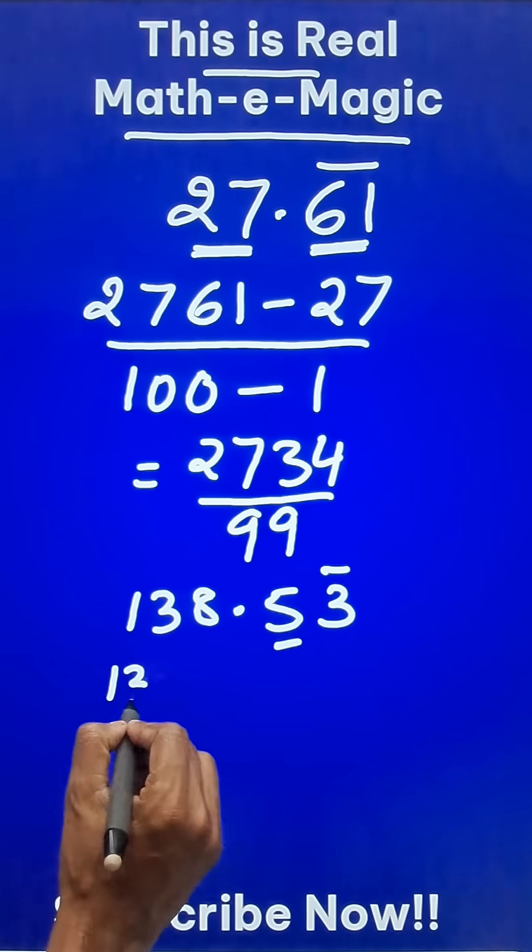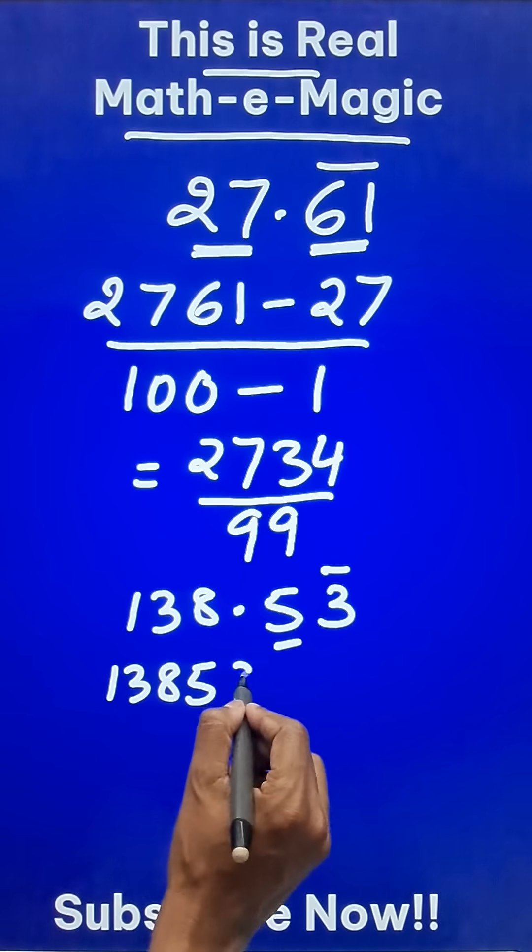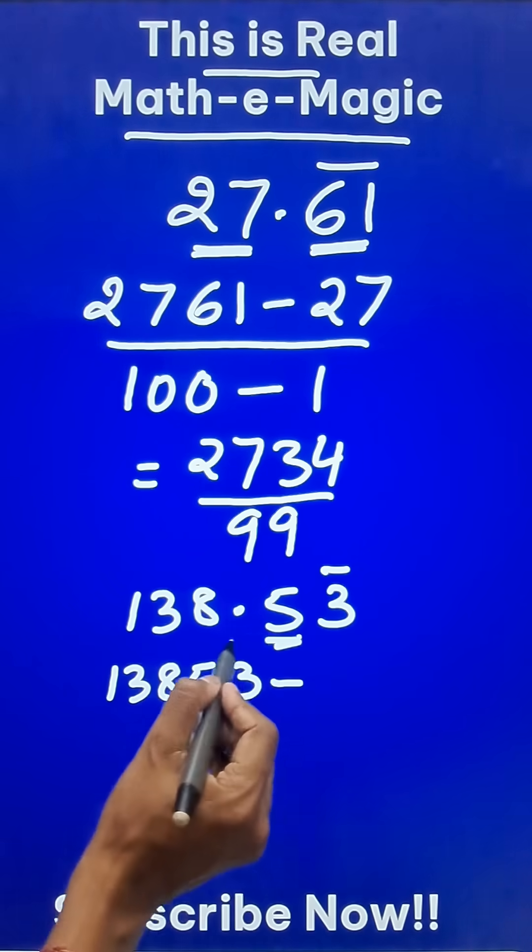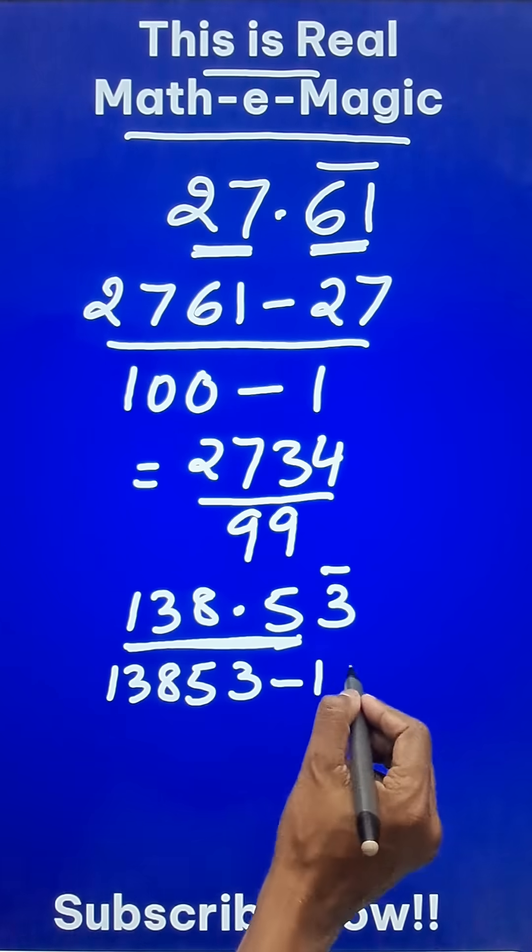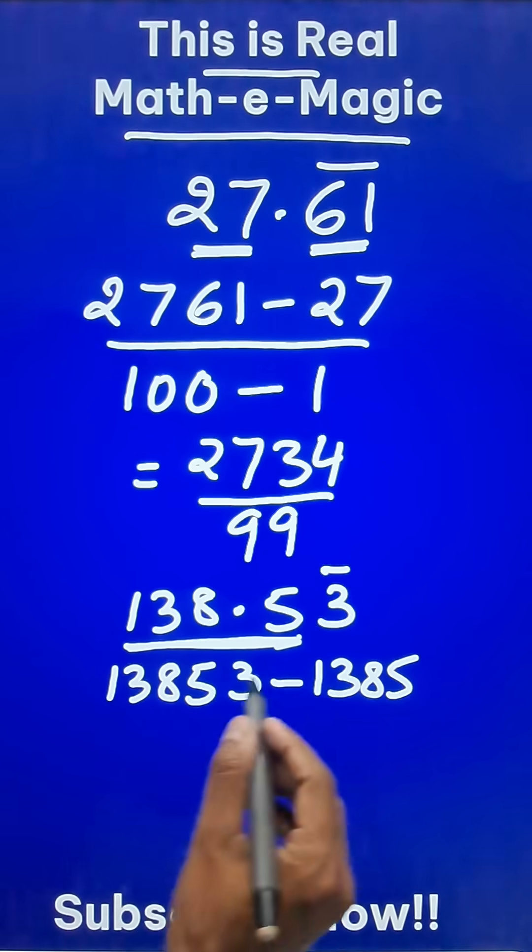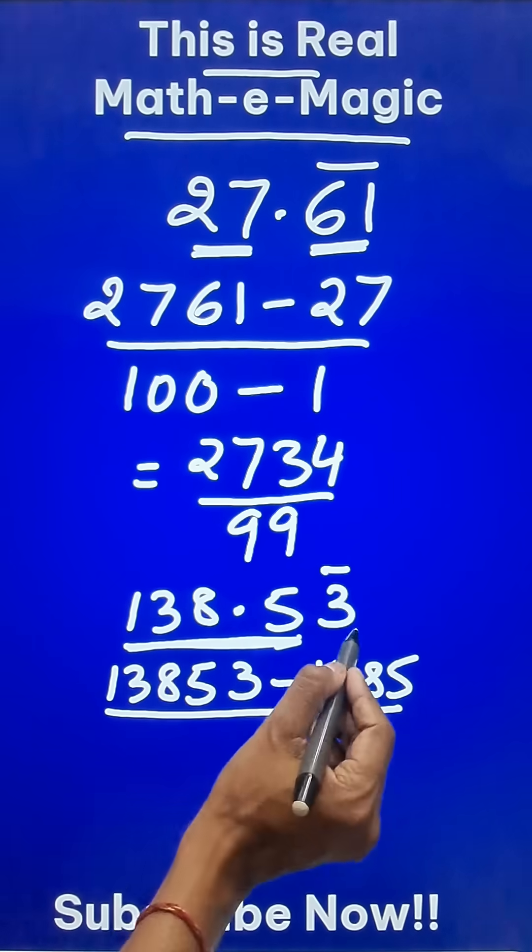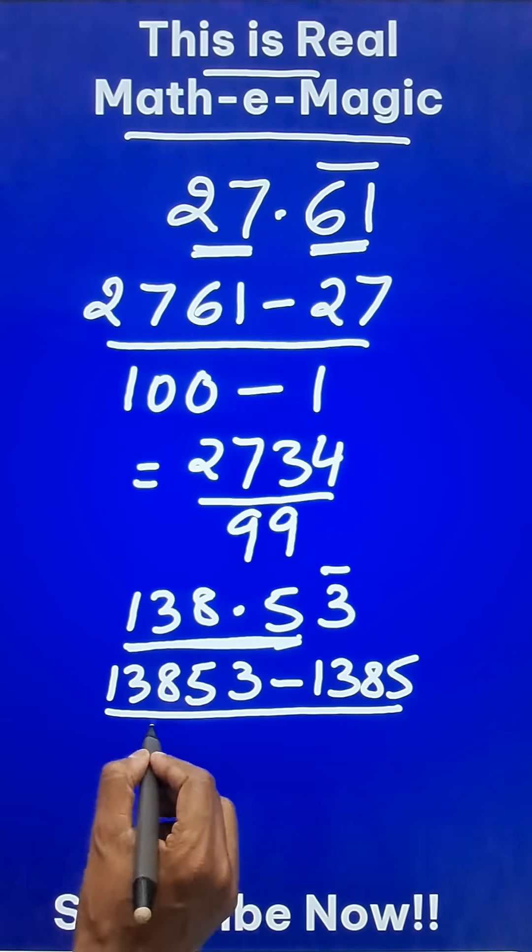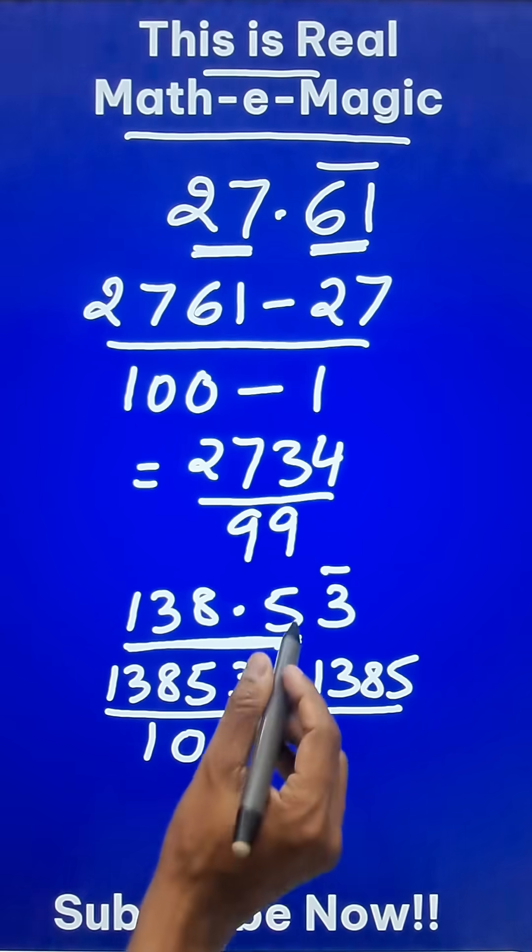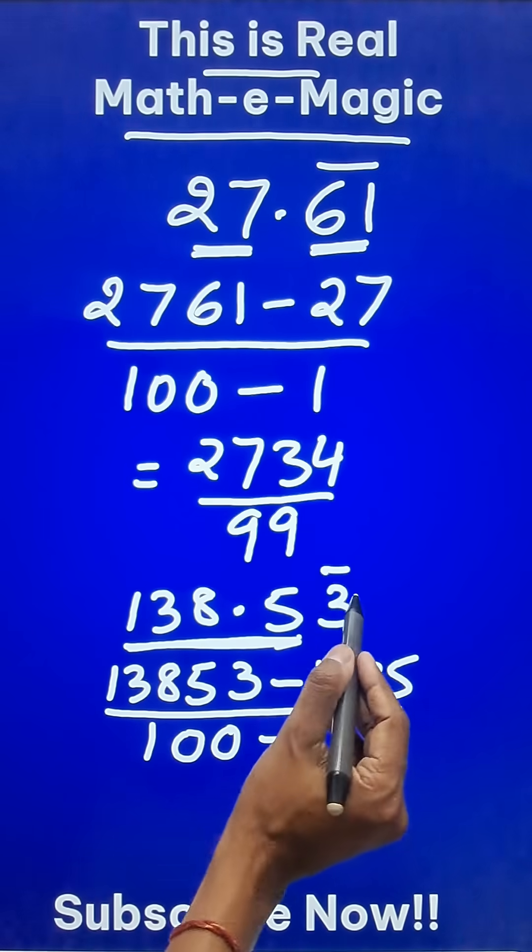Take the complete number 13853, subtract all the digits which do not have a bar, so 1385. Then in the denominator, since you have two digits after decimal, take 100, and finally subtract how many digits have a bar over it—1 digit.